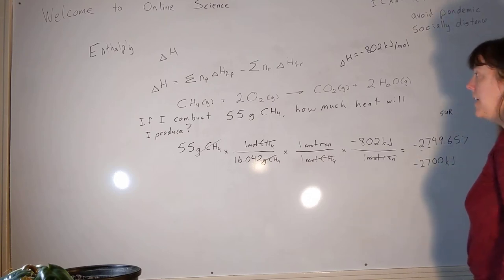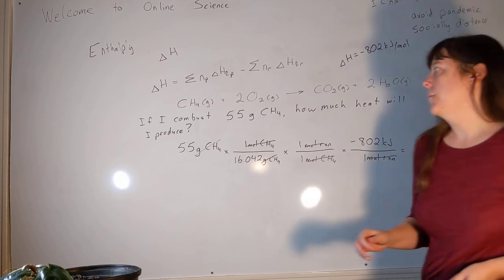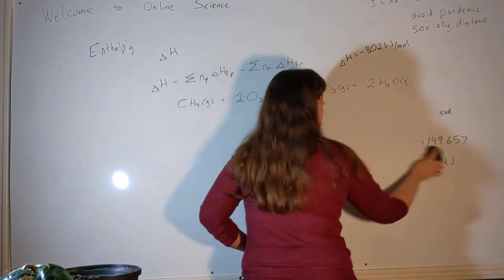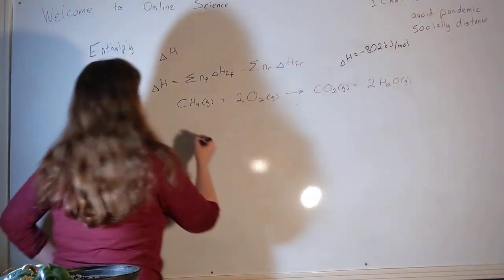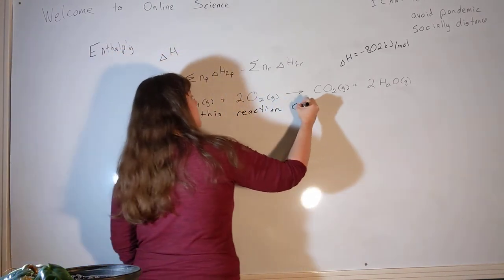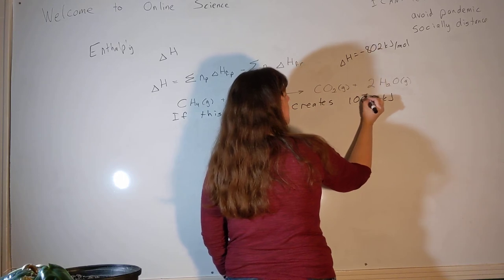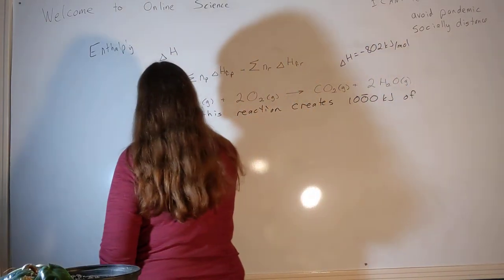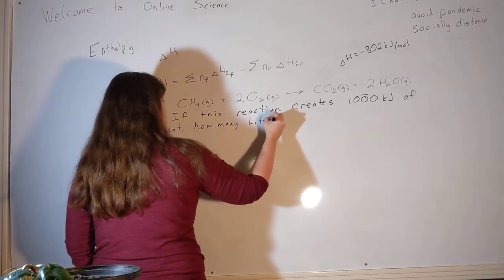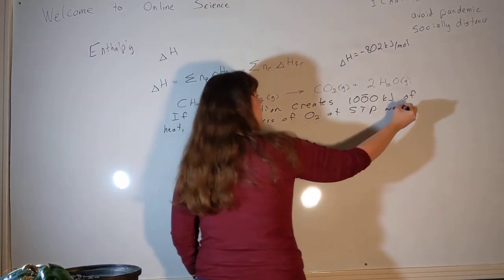All right? Now, you can imagine, I think, that if instead I wanted to know how much oxygen was required at STP. Actually, let's do a slightly different problem. Let's go with that idea, but set it up differently. Because I also want you to see how that moles of reaction can be a little bit more complicated. Let's do this. If this reaction creates 1,000, and we'll make that 1,000 with three sig figs, 1,000 kilojoules of heat. Let's do this. How many liters of O2 at STP were used?